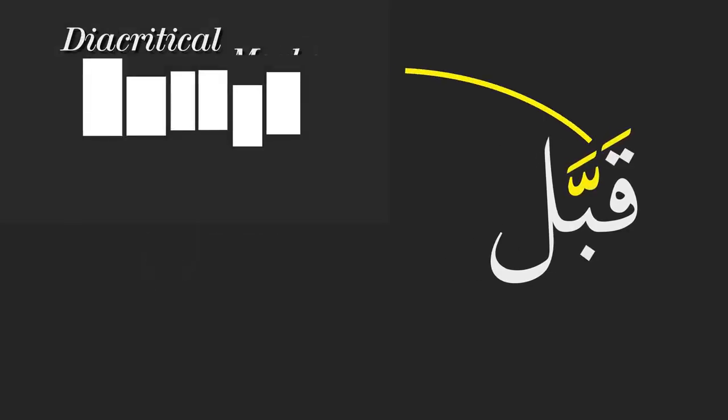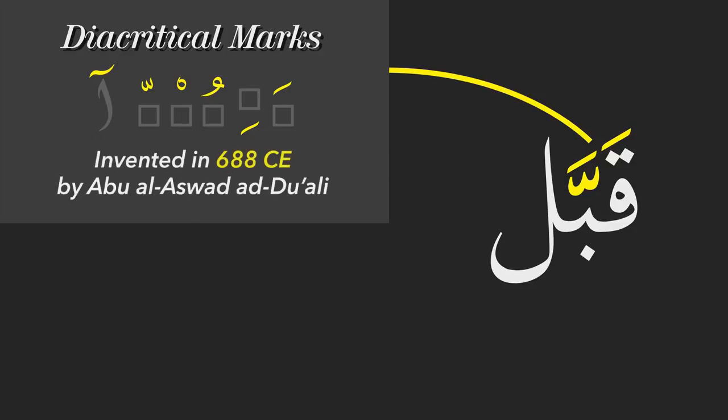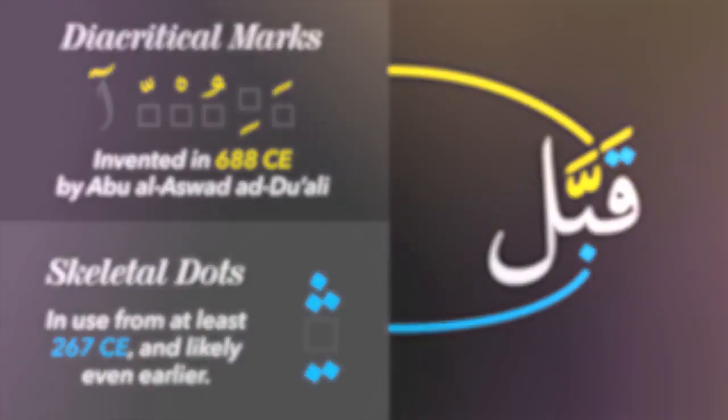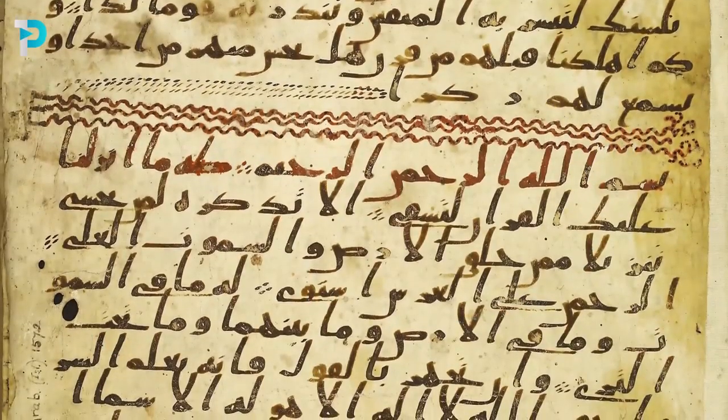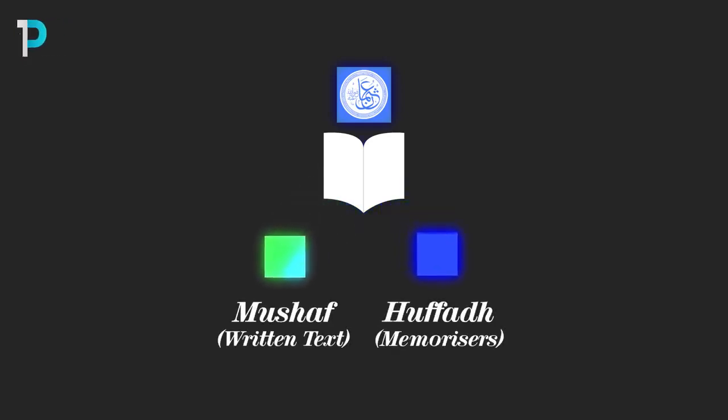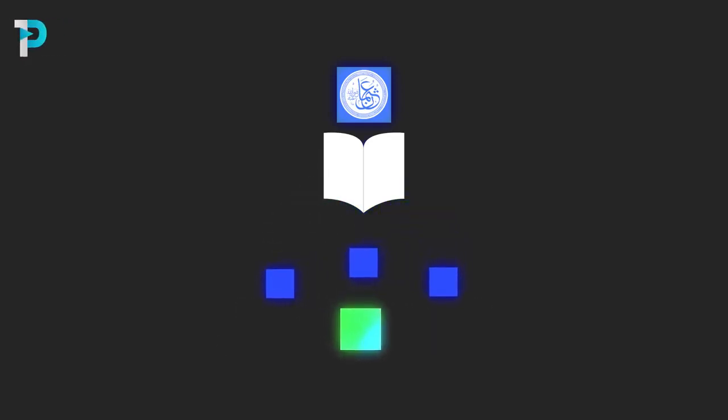Now whilst these diacritical marks weren't invented until 30 years after the death of Uthman, these markings, what are called skeletal dots, were known to the Arabs at the time of Uthman. But he must have intentionally decided not to include them in his original Mushaf. Now whilst we don't really know why, one possible reason is that he wanted to ensure that the Qur'an would always be taught and preserved through both written and oral methods. And that's where those official reciters who were sent out with copies of the Mushaf came into play.